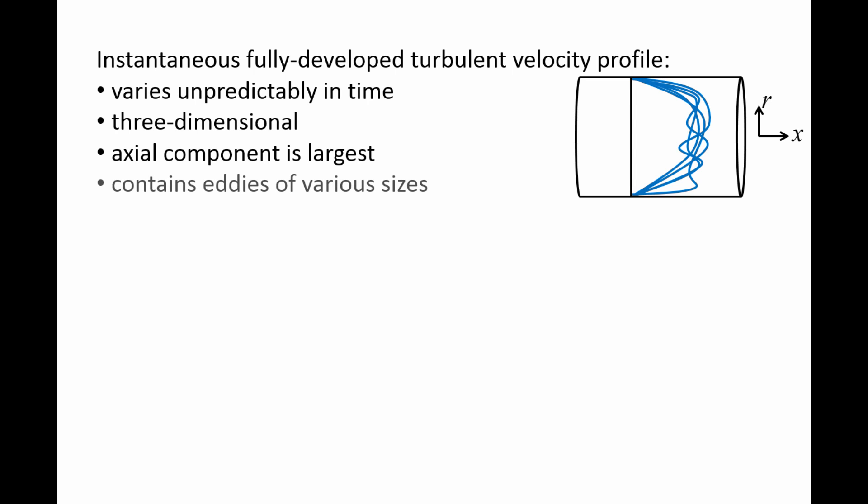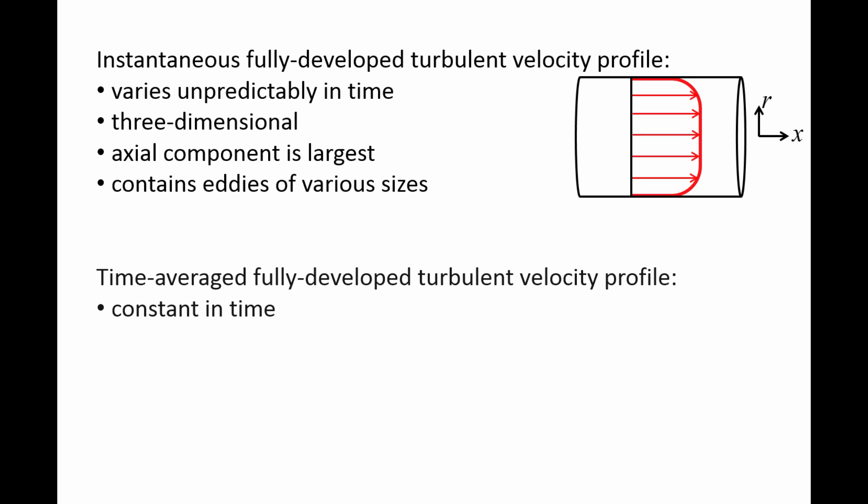Additionally, there are swirling eddies of various sizes that cause the flow to mix rapidly. When analyzing fully developed turbulent flows in pipes, we usually do not analyze the instantaneous velocity profile because its exact shape at a specific time is unpredictable. Instead, we use a time-averaged velocity profile, shown in red, because it is constant in time.